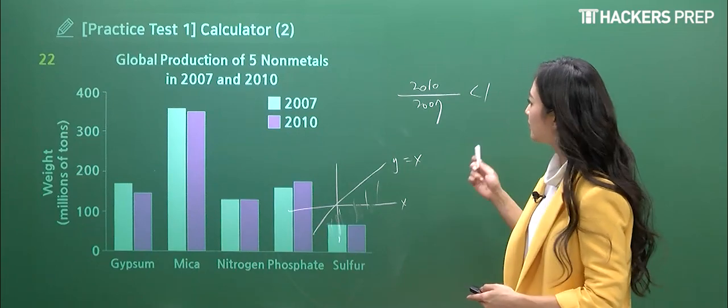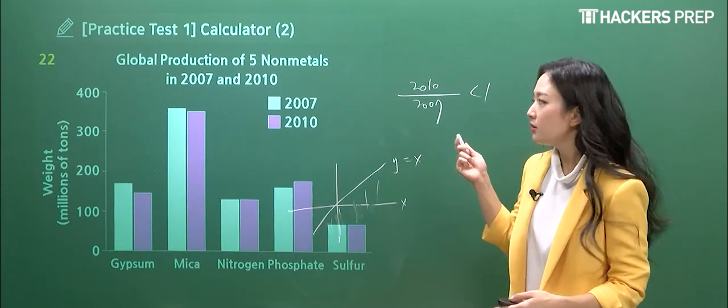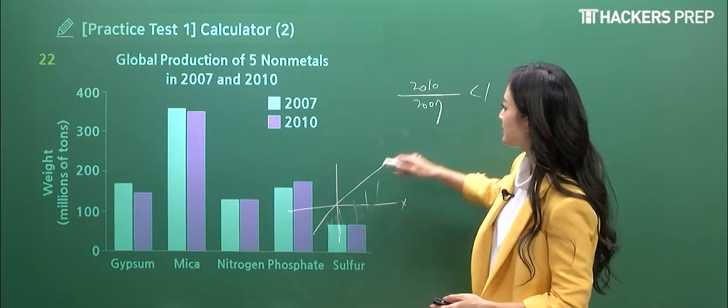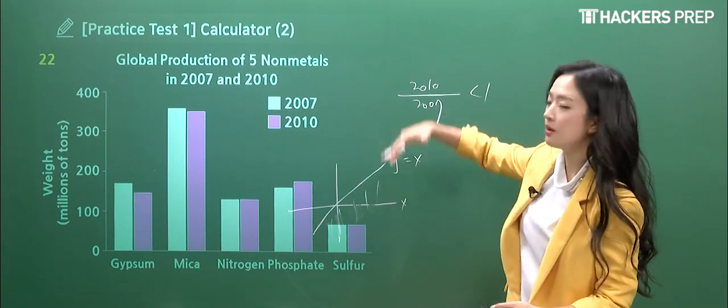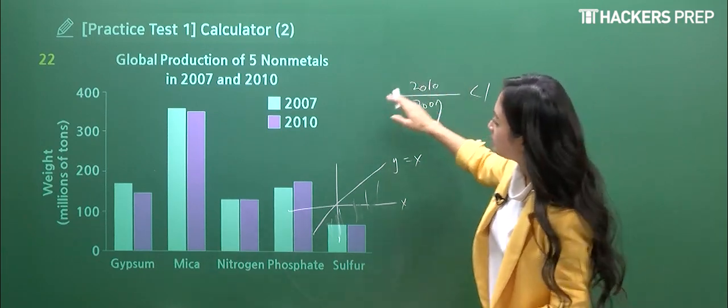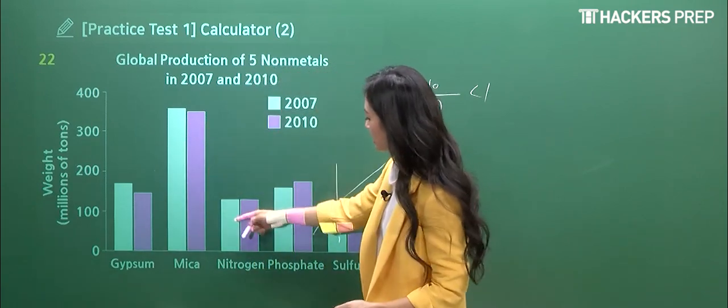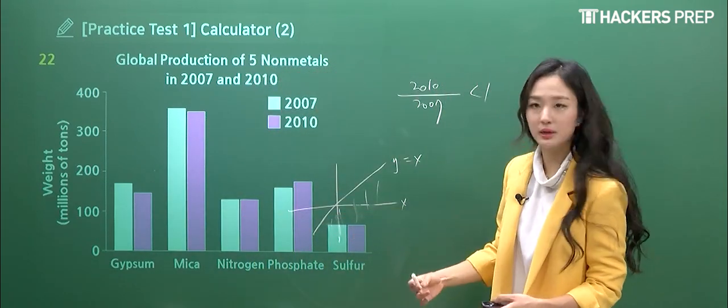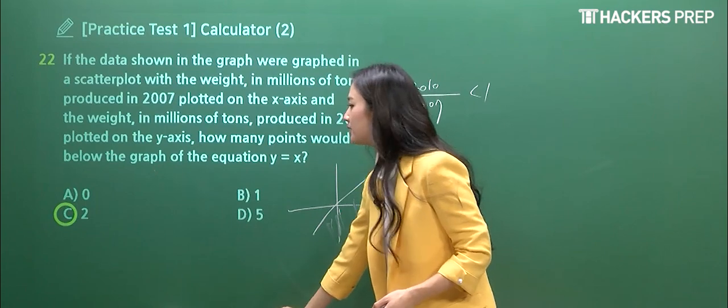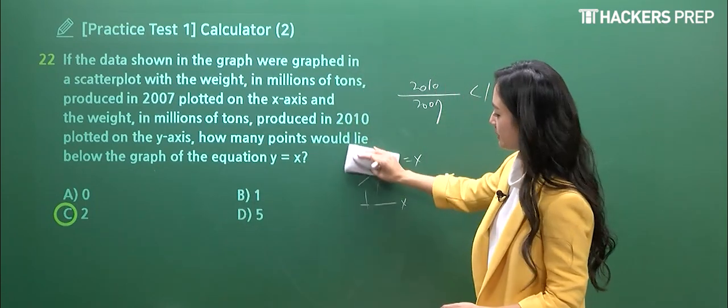So when you think about this, the x-axis represents the data set of 2007, and the y-axis represents the data set of 2010. And if you want the number of points that lie below this, it has to have a value that's less than one. Does that make sense? So you go back to your bar chart, and you're like, oh, how do you make this true? You're going to count the number of substances that has a greater 2007 bar compared to 2010. So when you look through it, you have this one, and Mica works, but none of them work. Therefore, how many total? The first two. That's why two is our match here.